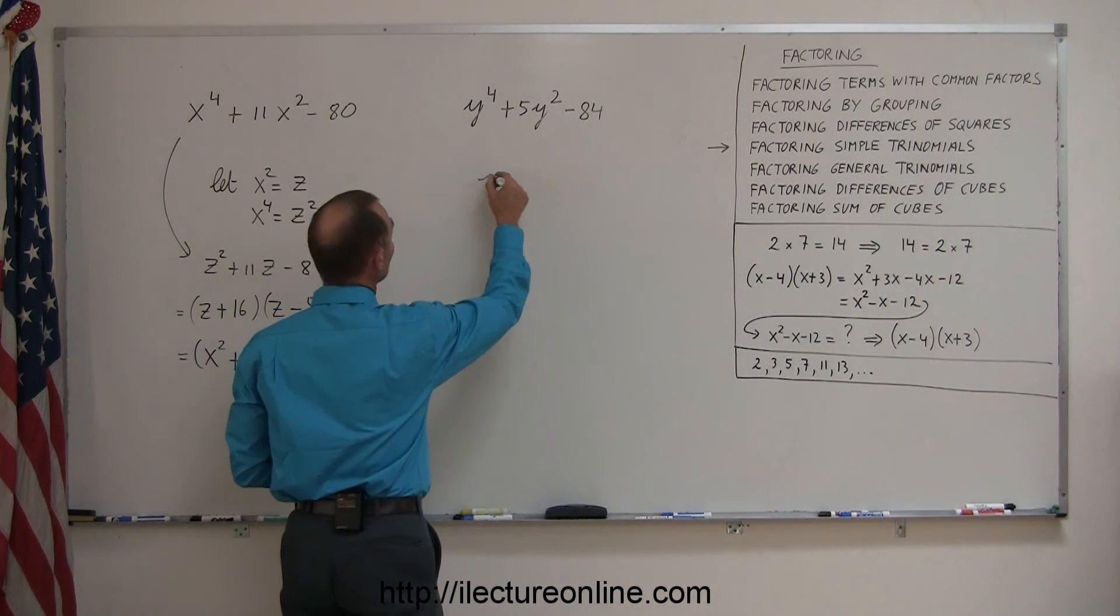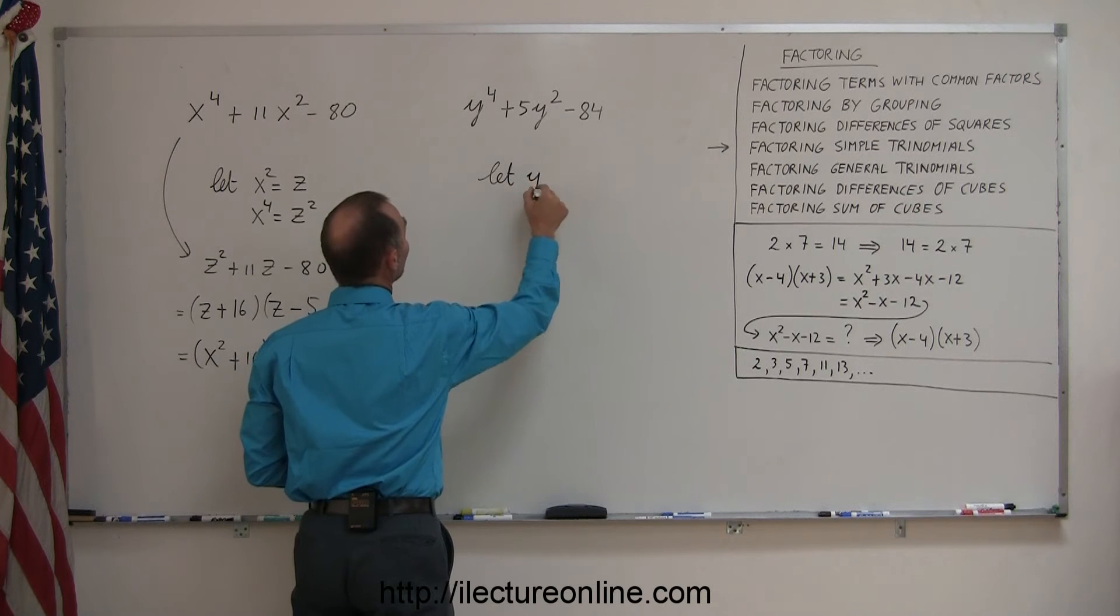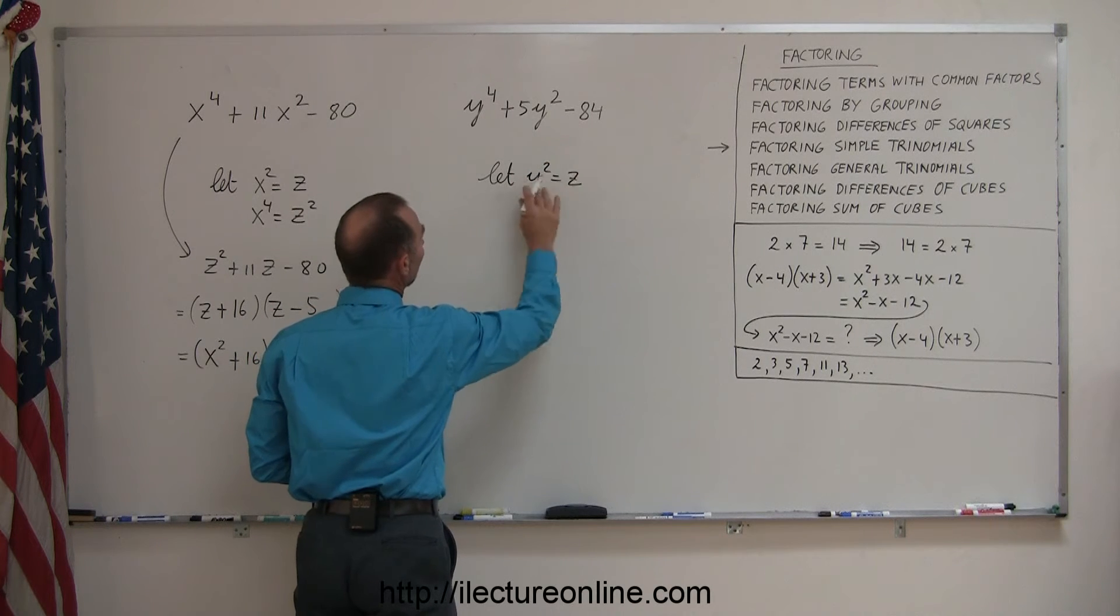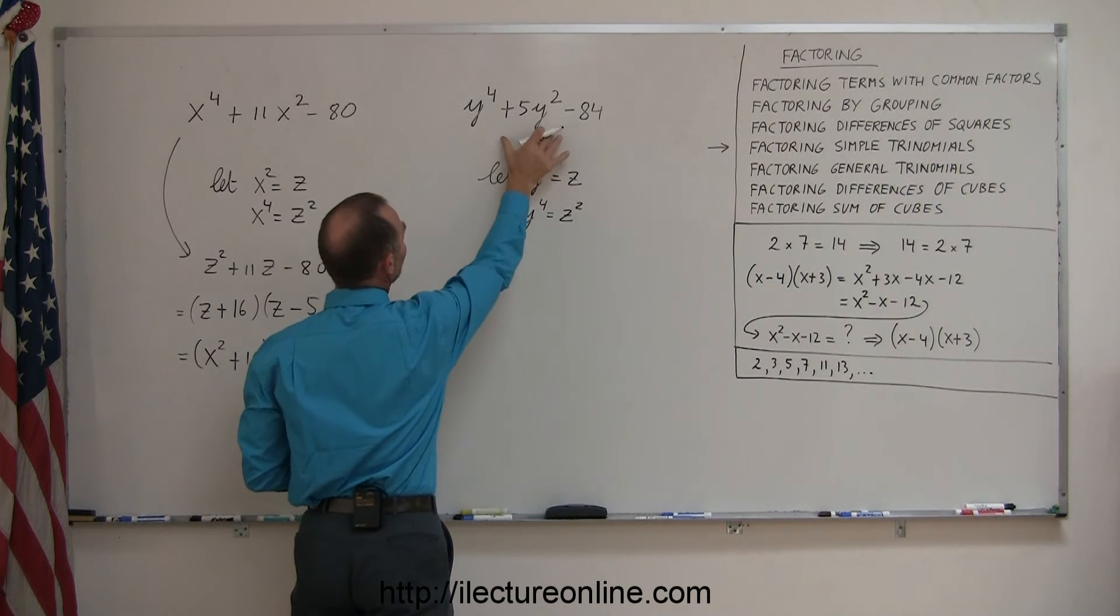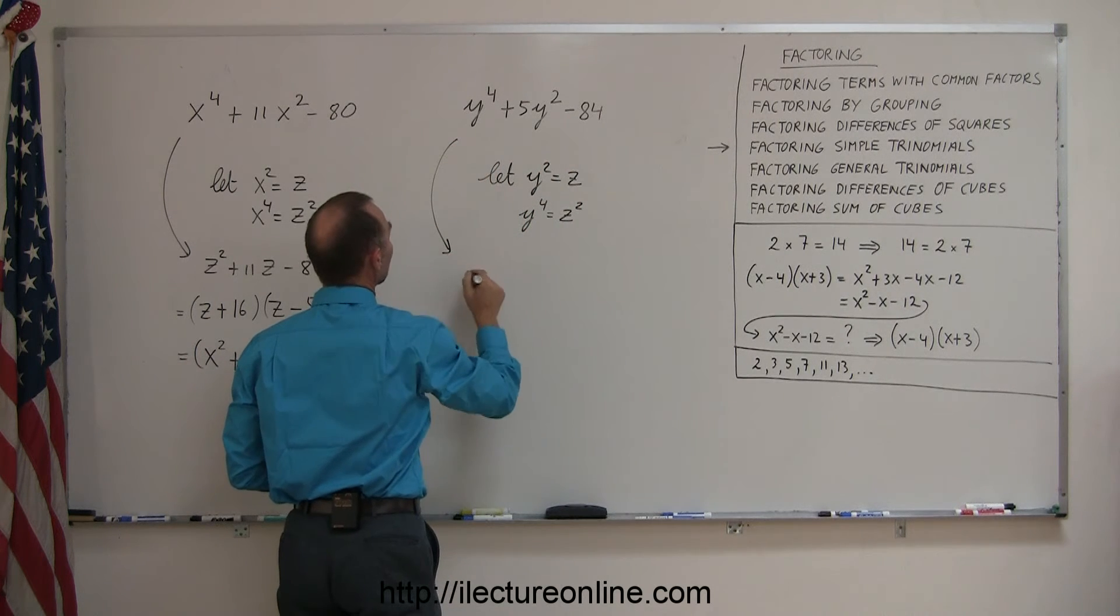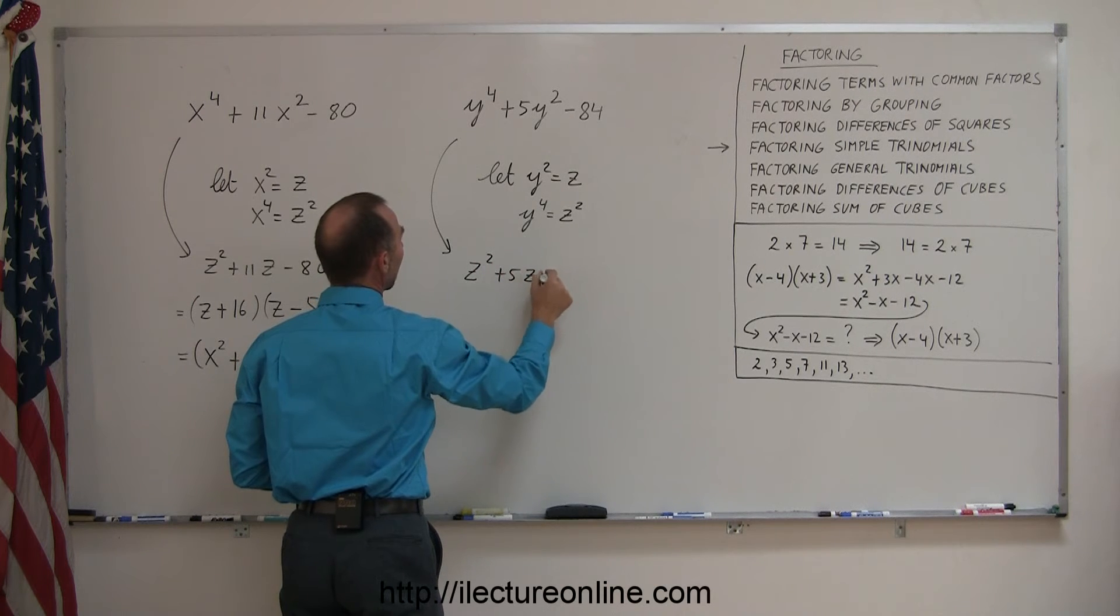Again, we're going to substitute. Let y squared equals z, and then if we square both sides we get y to the fourth equals z squared. We'll substitute that back in here, so this becomes z squared plus 5z minus 84.